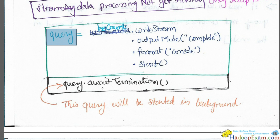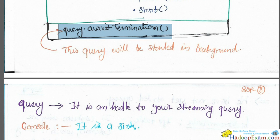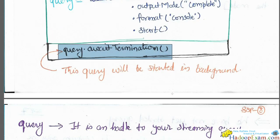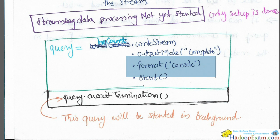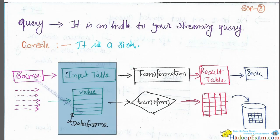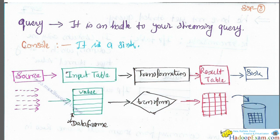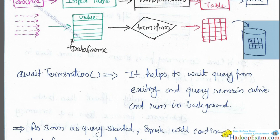`heCount` is internally different from a batch DataFrame because it is a streaming DataFrame. Running word count of the streaming data — processing has not yet started, only the setup is done. When you call write stream on `heCount` with output mode `complete`, format `console`, and `start()` — now this would be started. You would use the query reference as a handle for this sink operation. The query runs in the background, and you call `query.awaitTermination()` so it won't immediately terminate. The console is the sink here — we want to display the data as it is generated.